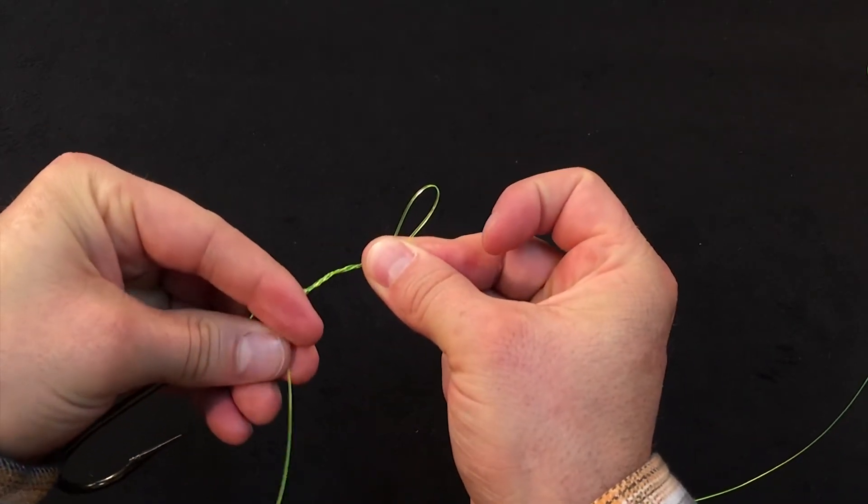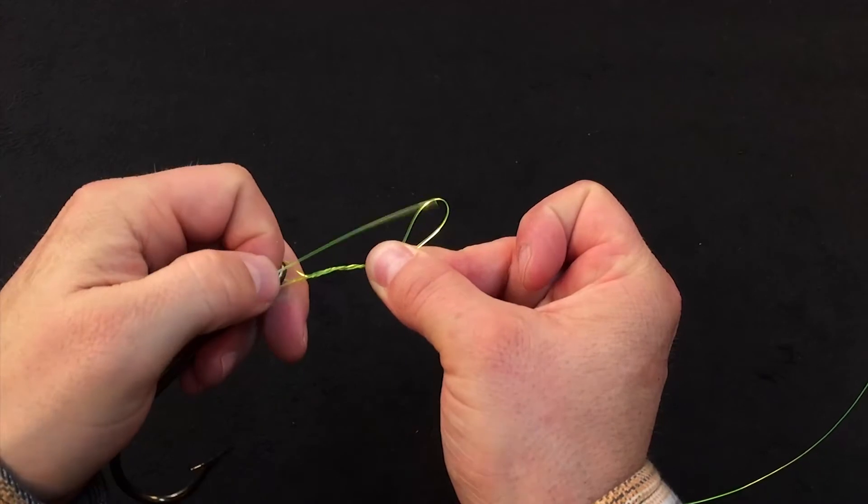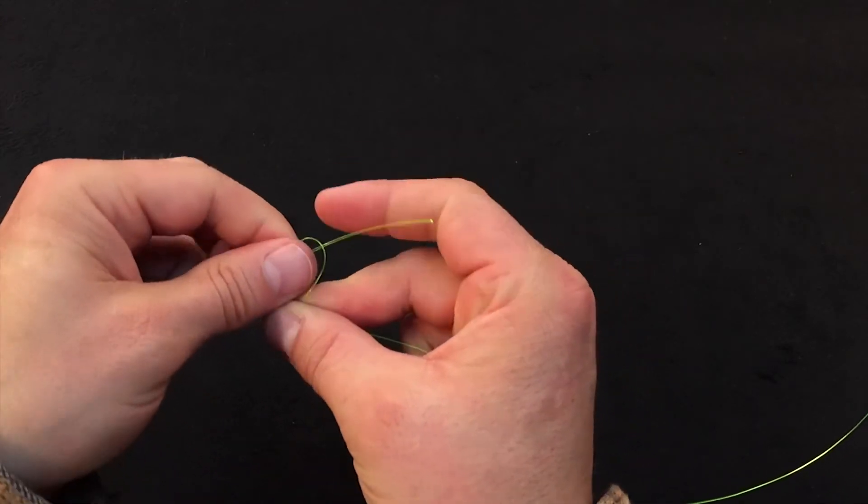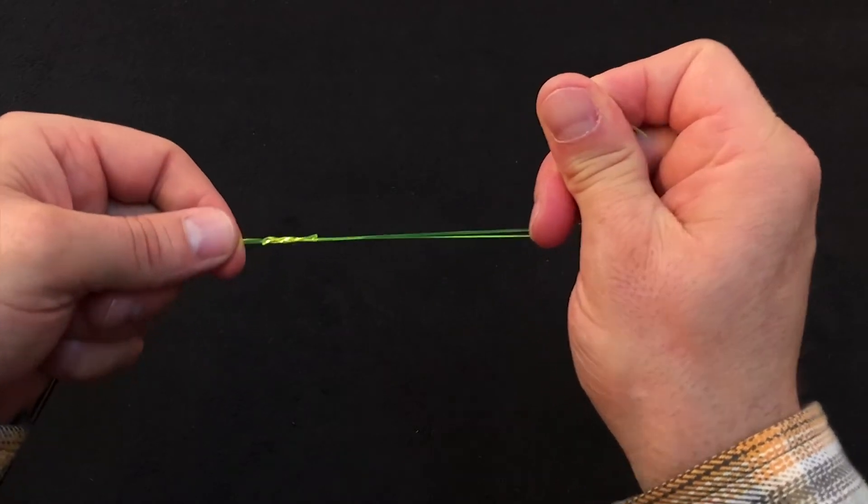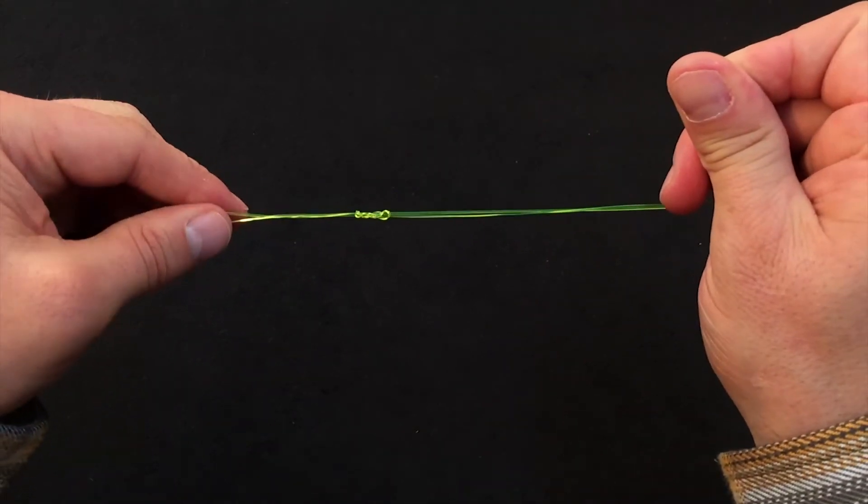Take that loop and take your tag end. You're going to take your tag end and pass it through the loop right there. You're going to draw that down, draw the slack out of the loop.